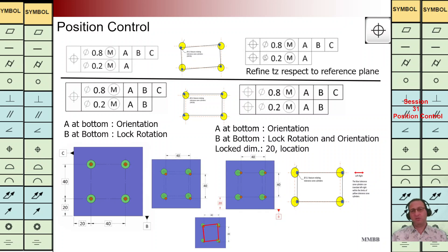At top right we are going to have two independent FCFs. The top FCF is the same as before, and the bottom one should be perpendicular to A. In this way we are going to refine just the TZ with respect to plane A. These two — composite FCF or two independent FCFs — have exactly the same meaning.